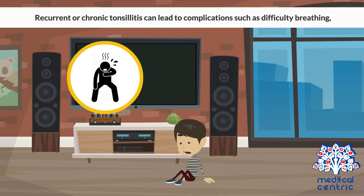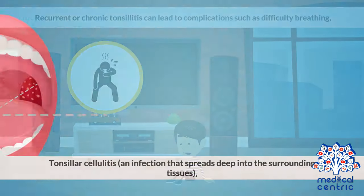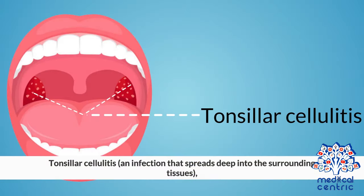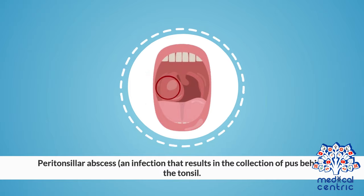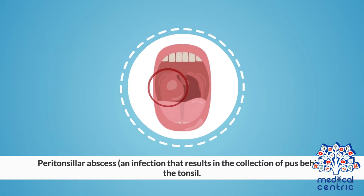Recurrent or chronic tonsillitis can lead to complications such as difficulty breathing, tonsillar cellulitis — an infection that spreads deep into the surrounding tissues — or peritonsillar abscess, an infection that results in the collection of pus behind the tonsil.